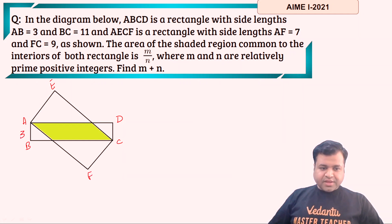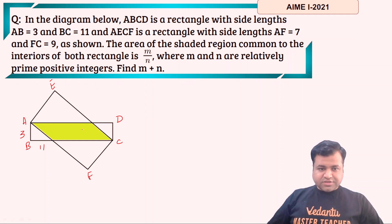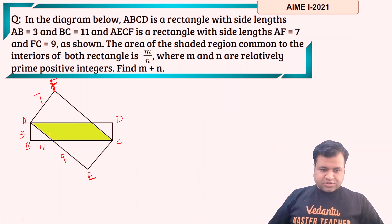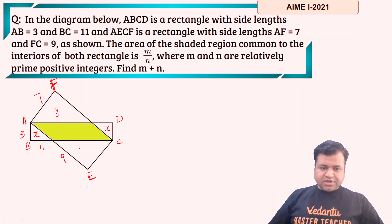AB side is given to be 3 and BC, the whole side, is given to be 11. AF is given to be 7. Let's name this point as F and this point as E. AF is given to be 7 and AE is given to be 9. So what we need to find is this shaded area. By symmetry, let's assume this area is x units; by symmetry this should also be x units. Let's assume this area to be y units; by symmetry this area should also be y, and let's assume the shaded area to be z.